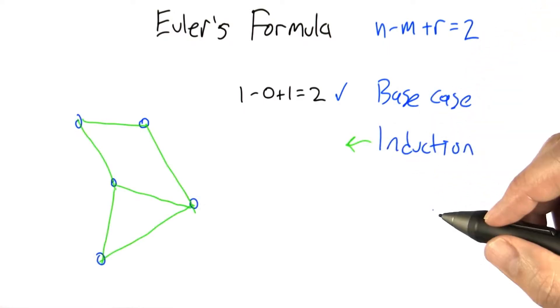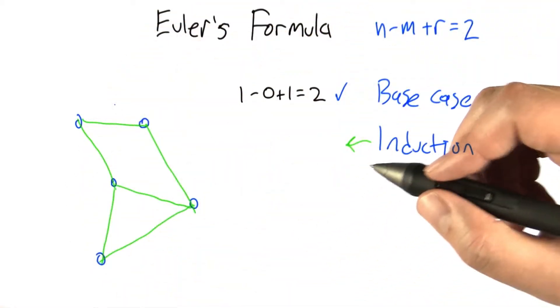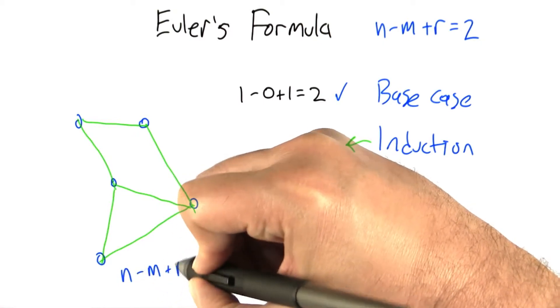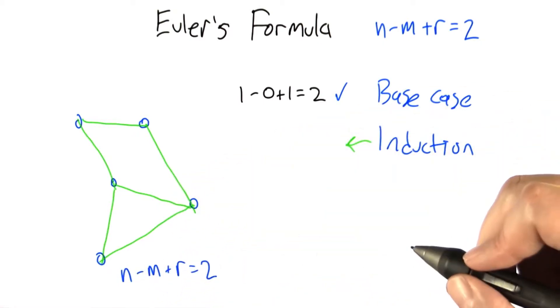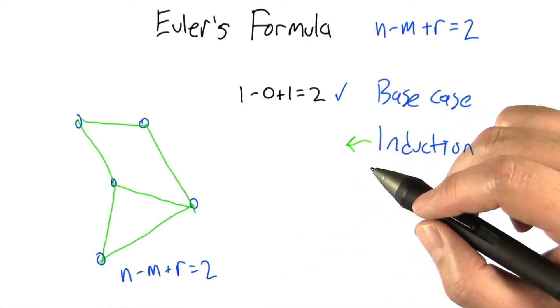Now we proceed by induction. Given that we're doing a proof by induction, we're going to assume that we have some planar graph and that Euler's formula holds for that graph. So we have already that n minus m plus r equals 2. And what we're going to do is we're going to add to this graph so that it's still planar and see what happens to this formula.